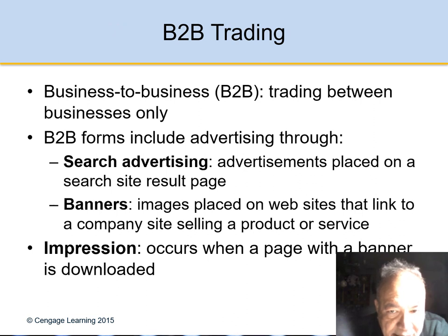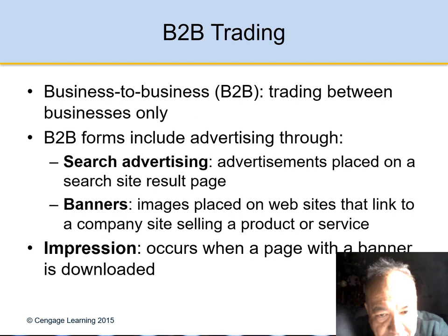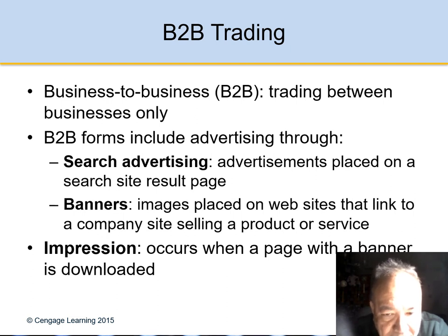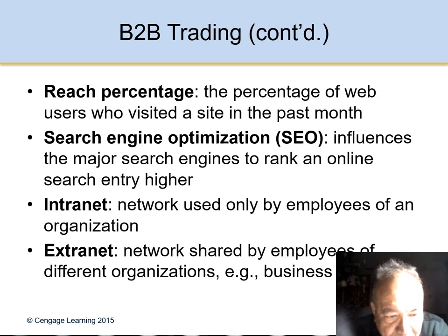Business-to-business is trading between businesses only — the relationship is between two businesses. This includes search advertising placed on search engines, banners which are images placed on the web that link to a company site selling a product, and impressions which occur when a page with a banner is downloaded. An intranet is only for employees, while an extranet is shared by different organizations.